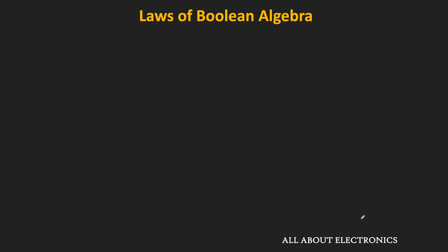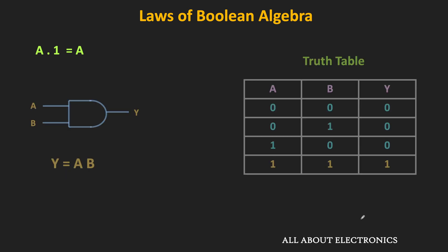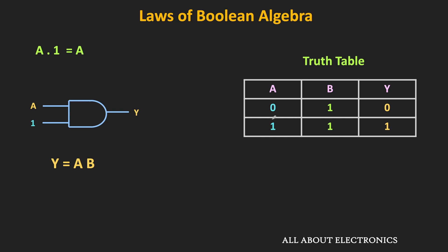The second law is a·1 = a, meaning when we do the AND operation of a and logic 1, the output is equal to a. This is quite similar to normal algebra. Looking at the truth table of the AND gate where one input is always set to 1: when a is 0, the output is 0, and when a is 1, both inputs are 1 so the output is 1. As you can see, the y column is the same as a, therefore a·1 = a.